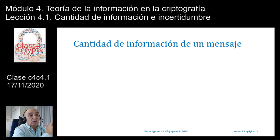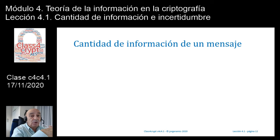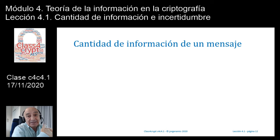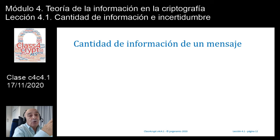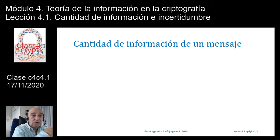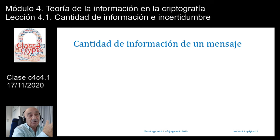Vamos a definir lo que es cantidad de información de un mensaje. Primero haremos una definición del tipo subjetiva: qué nos indica que un mensaje tiene mayor o menor cantidad de información. Y finalmente veremos una interpretación del tipo objetiva, que es la que nos interesa. Esa es la que estudió Claude Shannon para cuantificar la información y llegar a conceptos de entropía, entropía condicional y otras cosas que iremos viendo en próximas clases.